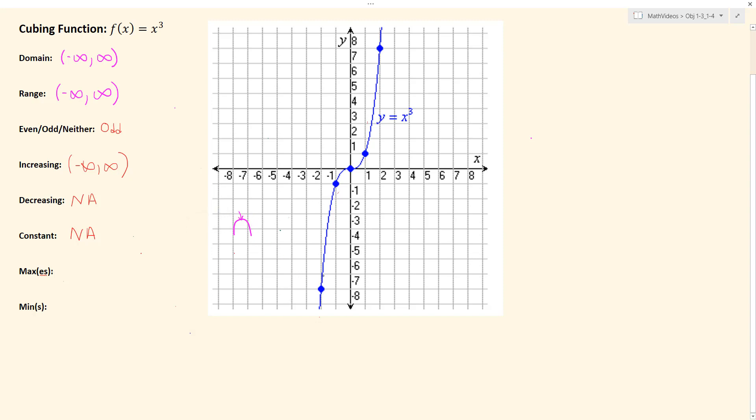So when we look at our graph, it's constantly increasing, and so there's never a point that you come across that's like the top of a hill that is a relative high point. And so we would say that we have no relative maximum, so it's not applicable.